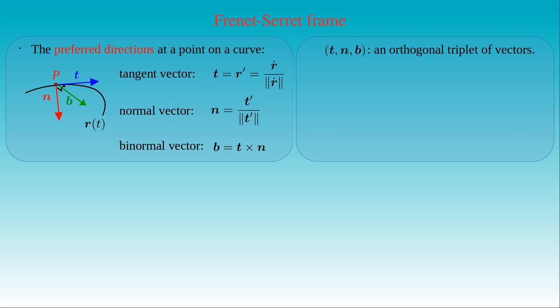We will prove that the triplet T, N, B is an orthonormal set of vectors. By definition, the tangent and the normal vector have unit lengths. Since the length of any vector can be written as the scalar product with itself, the derivative of the scalar product of any unit vector — for example the tangent T — with itself vanishes. As a result, the derivative of T·T is equal to zero. Applying the Leibniz rule, we obtain two times the dot product of T and T-prime. Then T·T' vanishes, meaning the tangent T is perpendicular to its derivative, and therefore also perpendicular to the normal vector N.